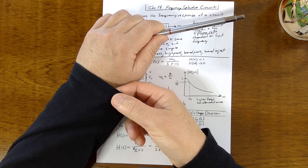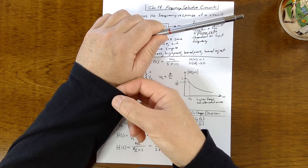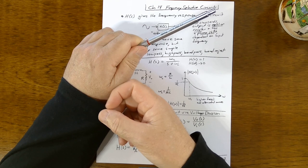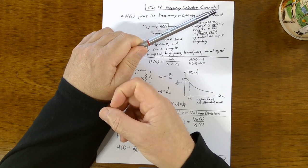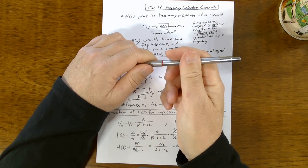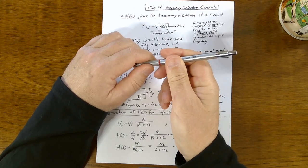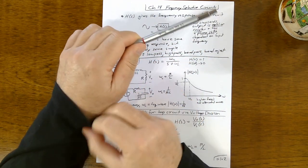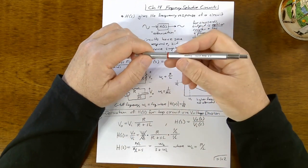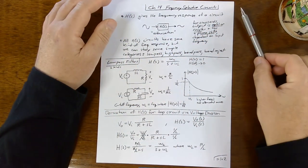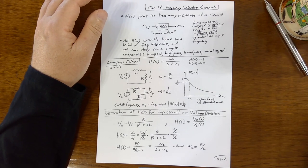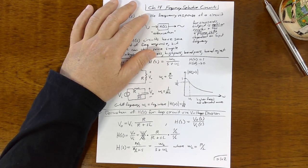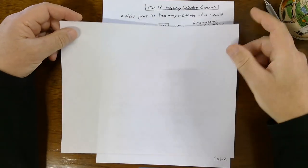Back in March I was wearing a 10-ounce black sweatshirt, then I switched to a six-ounce black sweatshirt, and now I'm down to a four-ounce black t-shirt. So I've got all my equipment and I'm ready to go. We're going to do Chapter 14: Frequency Selective Circuits.